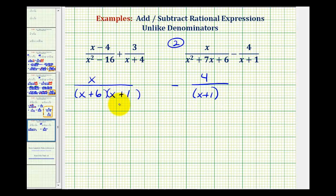Now remember our goal here is to determine a common denominator. Notice how this denominator here does not contain the factor x plus six. So we can multiply the denominator by x plus six as long as we do the same to the numerator. Remember x plus six over x plus six would be equal to one.